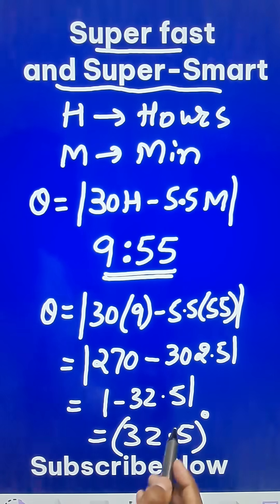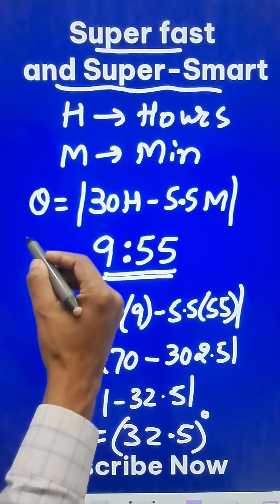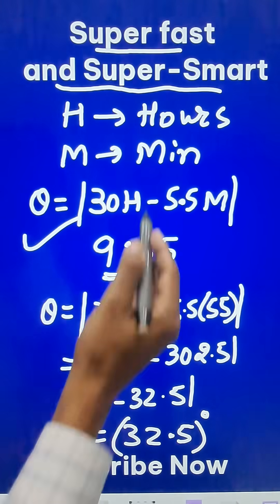That means the angle between the hour hand and the minute hand at 9:55 will be 32.5 degrees. So this is the direct formula for calculation of the angle.